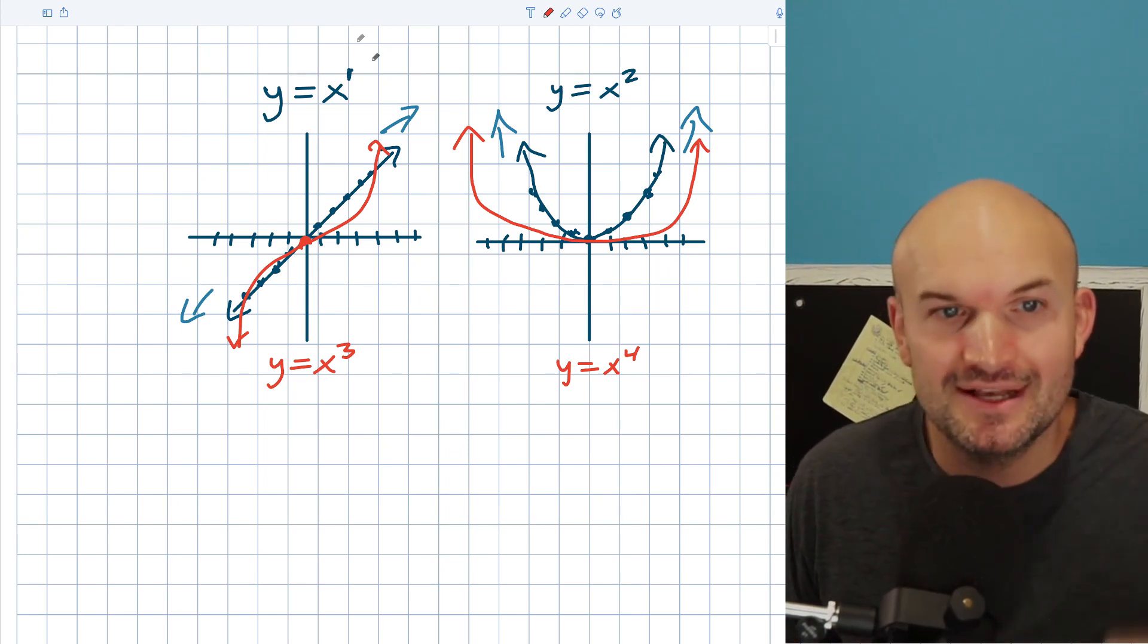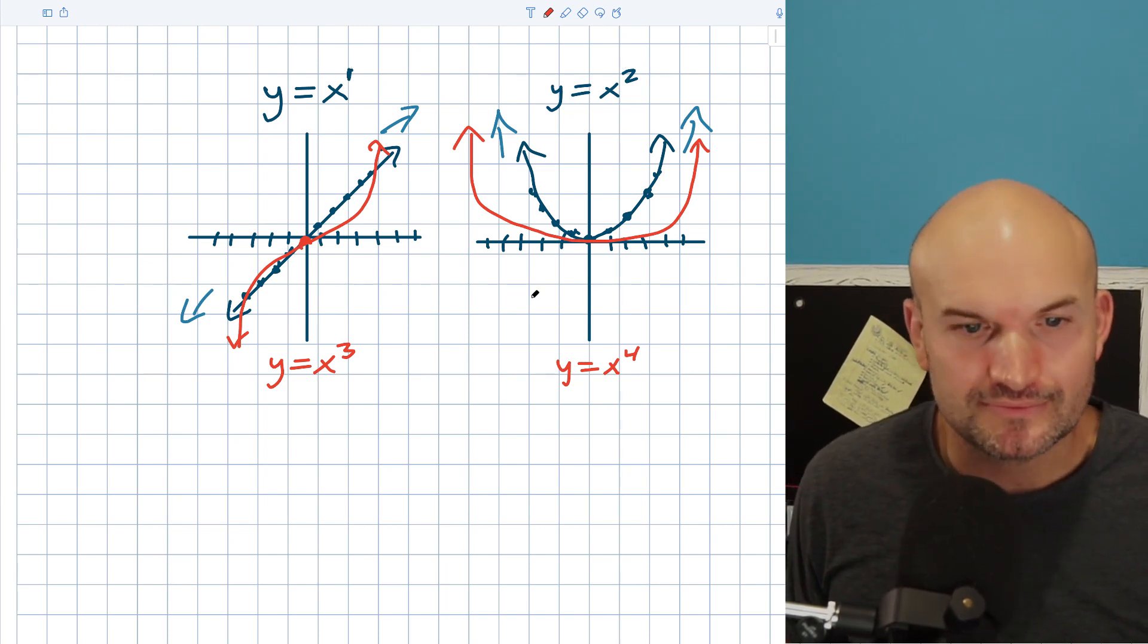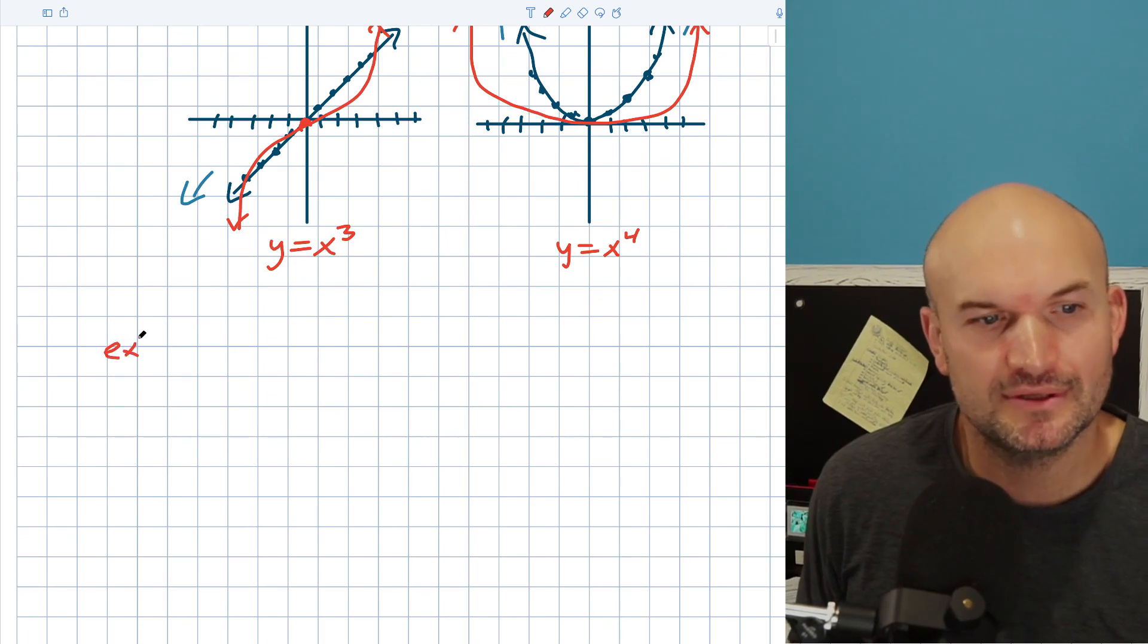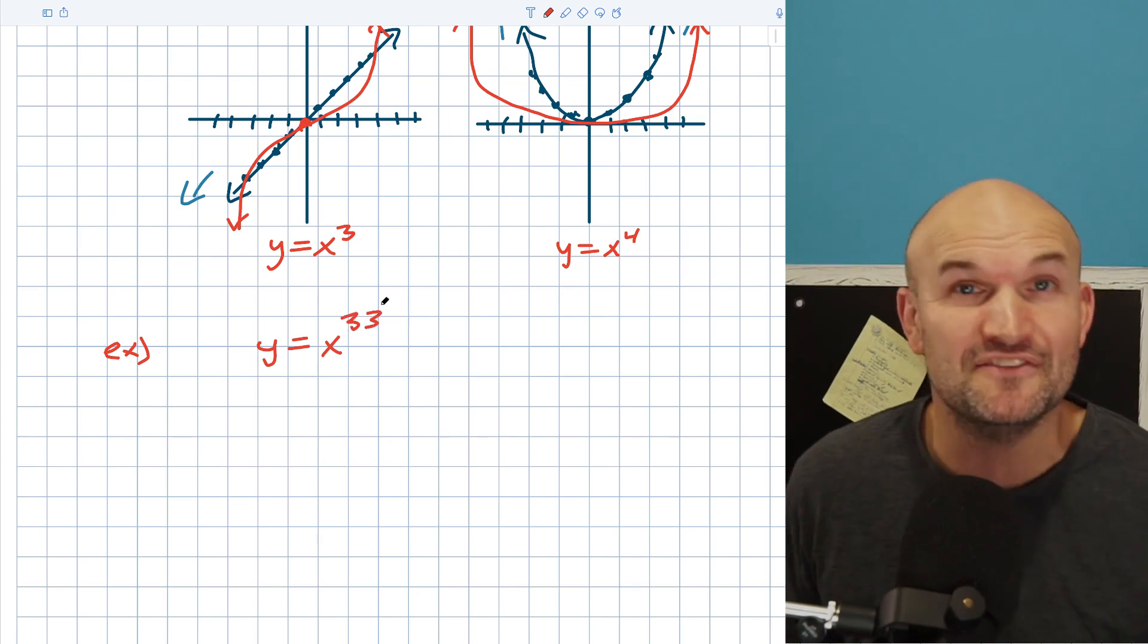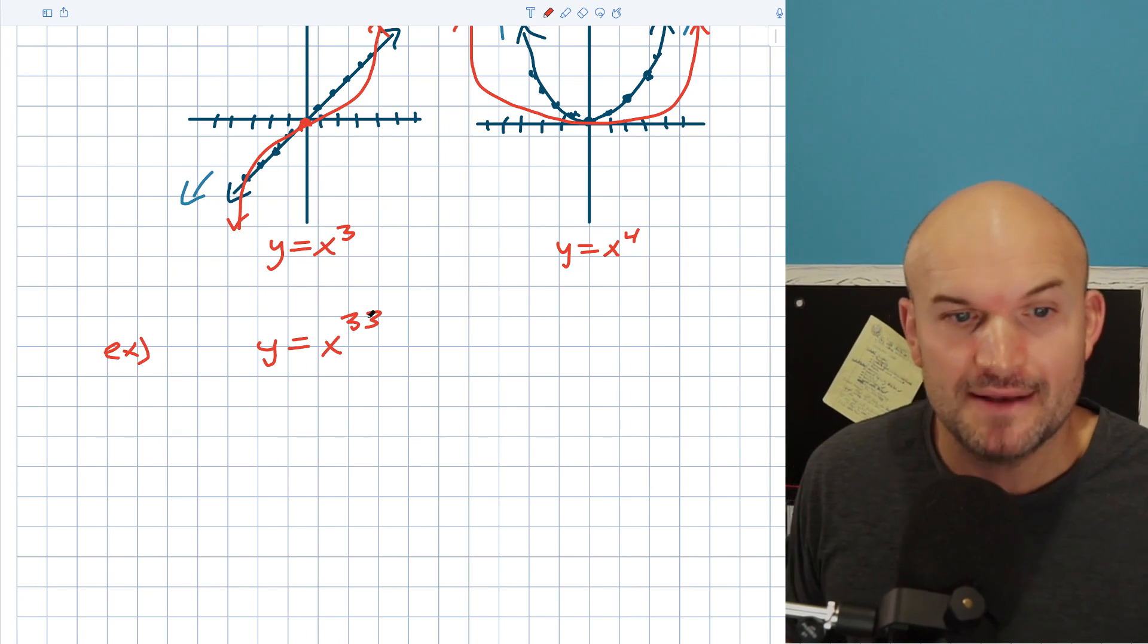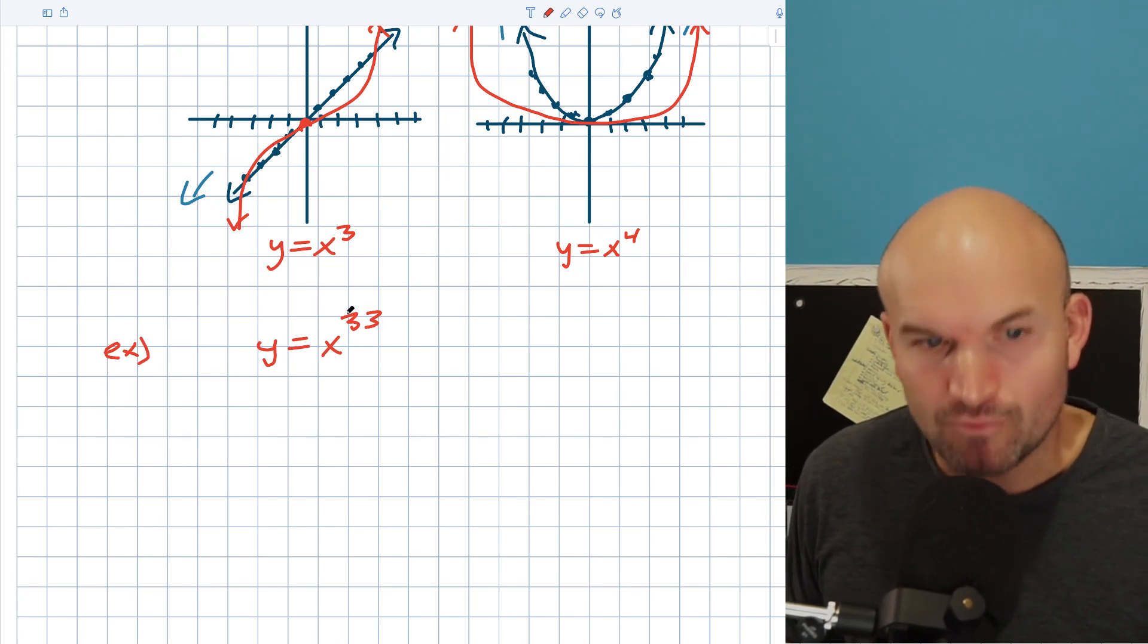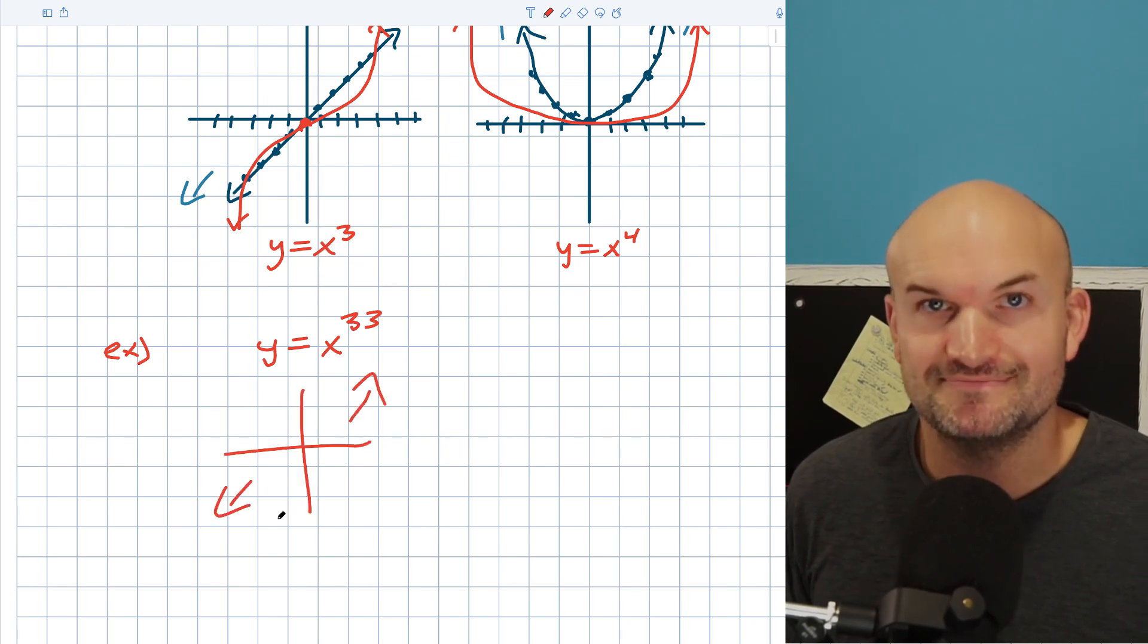It's all about the degree. Is it even, or is it odd or is it even? Because here's the same thing. If I was going to ask you an example, and I'll say, what about y is equal to x to the 33rd? You're like, I have no idea what that graph looks like. And I'd say, yeah, you probably don't. But it doesn't matter. What is my degree of my polynomial? It's odd. So guess what? My end behavior is going to be, it's going to rise to the right and fall to the left.